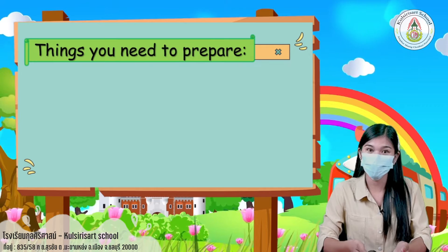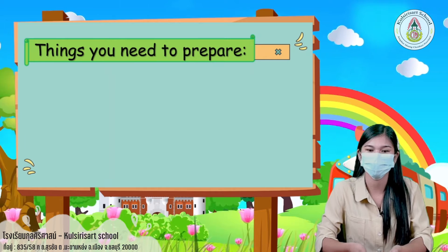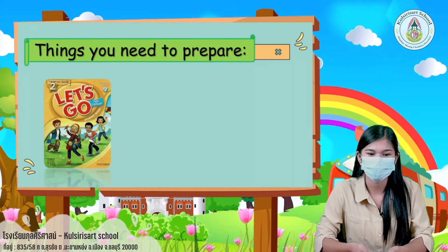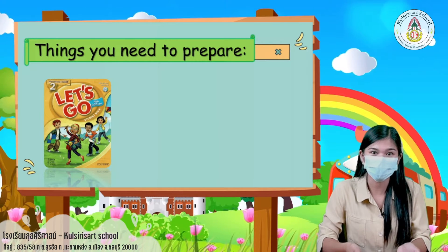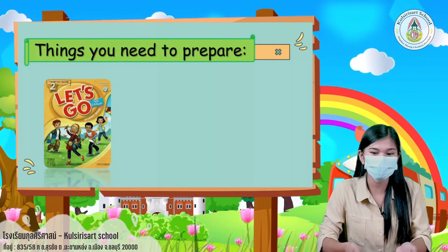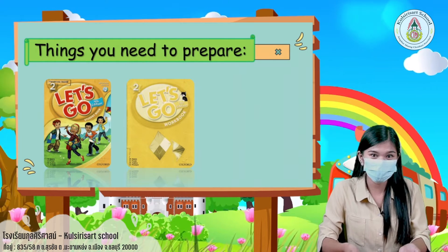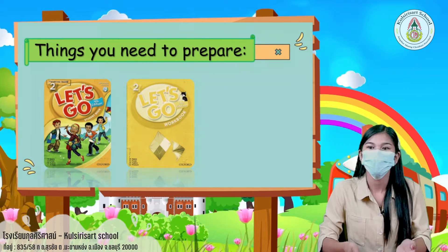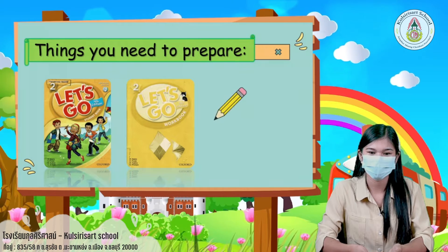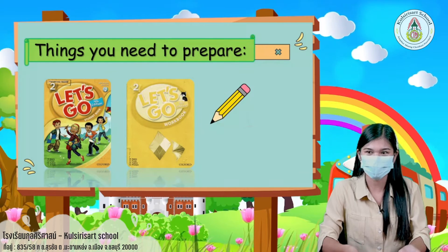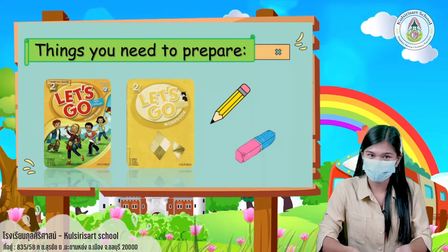So before we start, here are the things that you need to prepare: your Let's Go student book for your guide, your Let's Go workbook for your activity, a pencil, and an eraser.